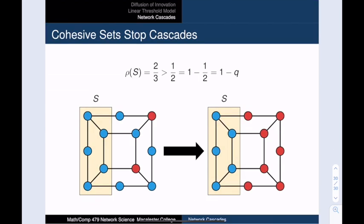So let's return to the example that did not have a complete cascade. We can now see that the five blue vertices that never turn red form a cohesive set. Four of the vertices in S have density two thirds, and the last one has density 1. So the density of this set is two thirds, which is greater than 1 minus one half, which is one half. And so the adoption cannot spread into S when it starts outside of that set.